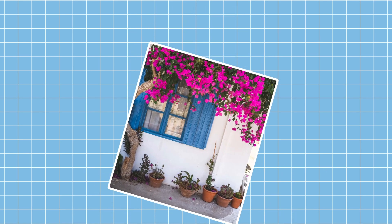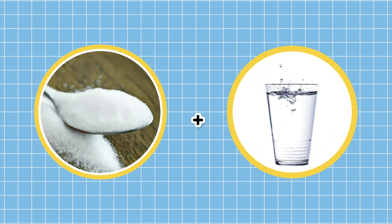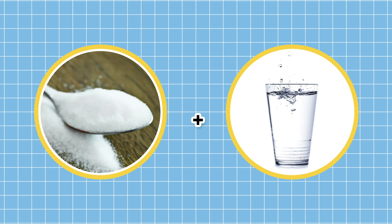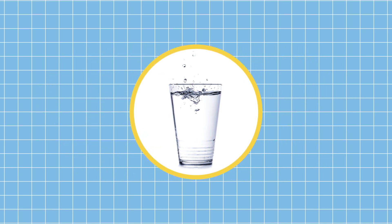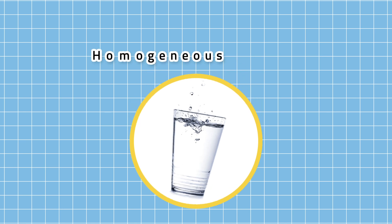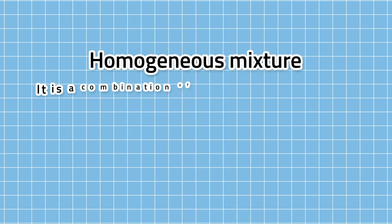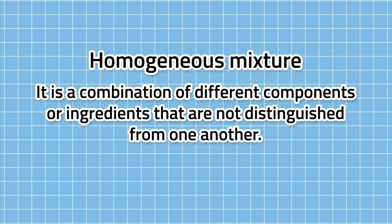Now, let's try to put some sugar on a glass of water and mix it. What happens? You see, as you mix it, the sugar slowly disappears. We call this a homogeneous mixture. A homogeneous mixture is a combination of different components or ingredients that are not distinguished from one another. This mixture is also called a solution.